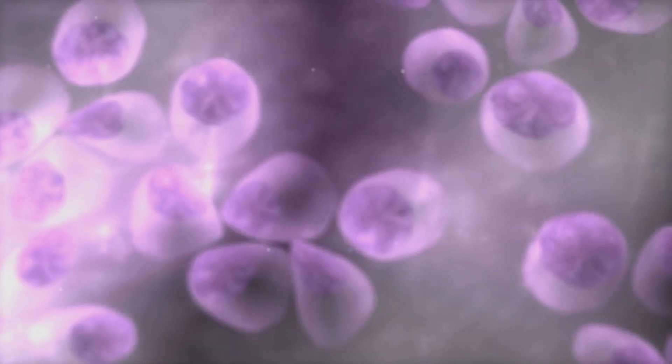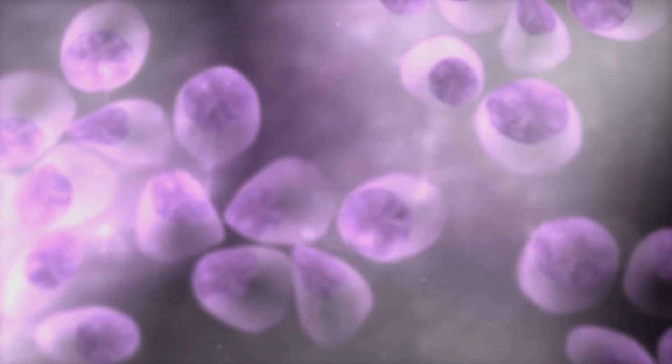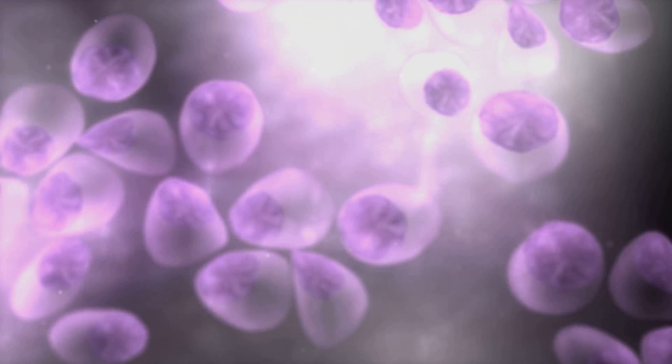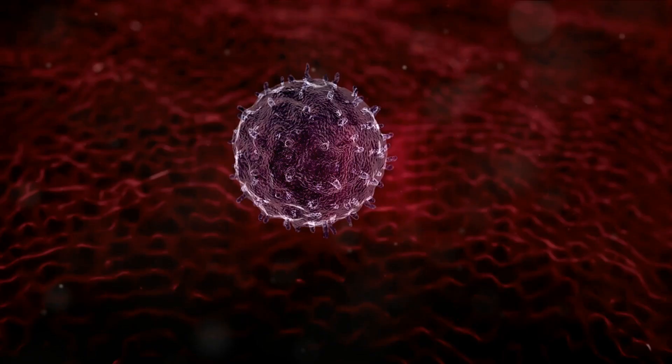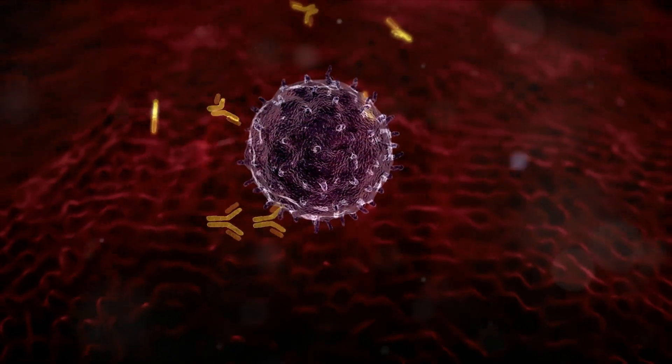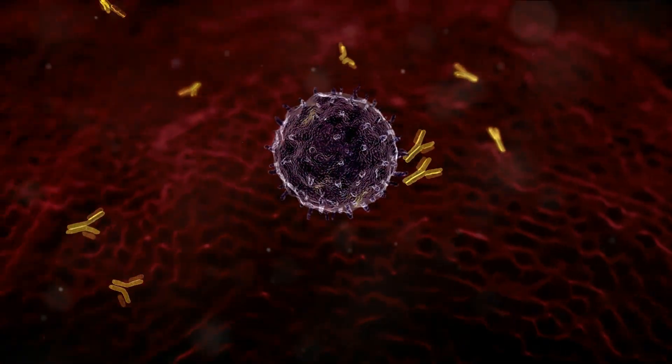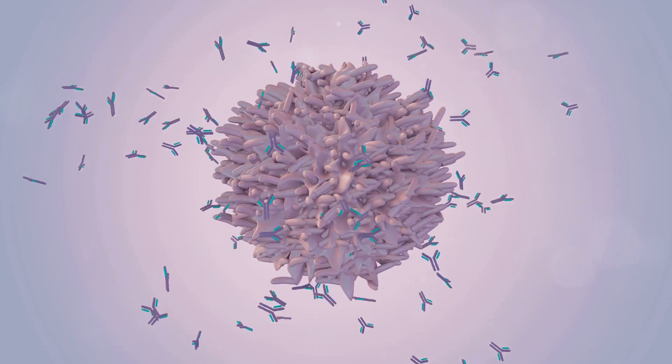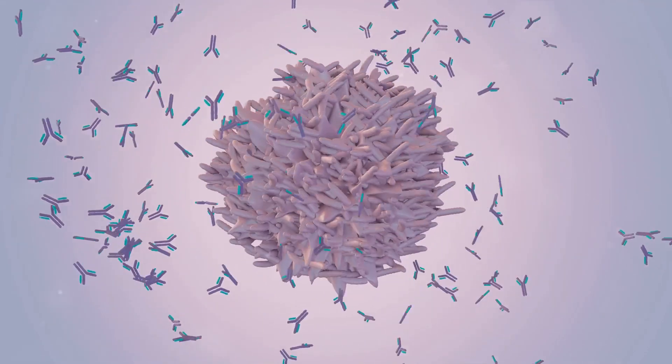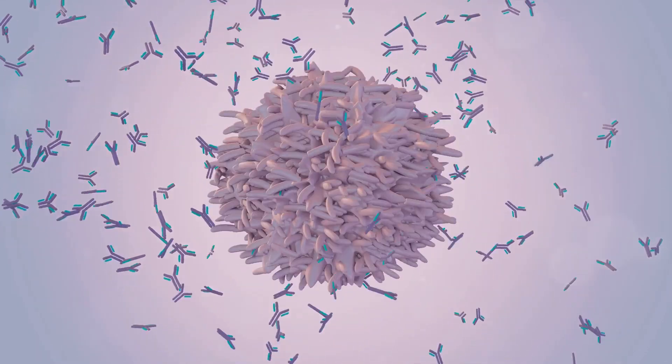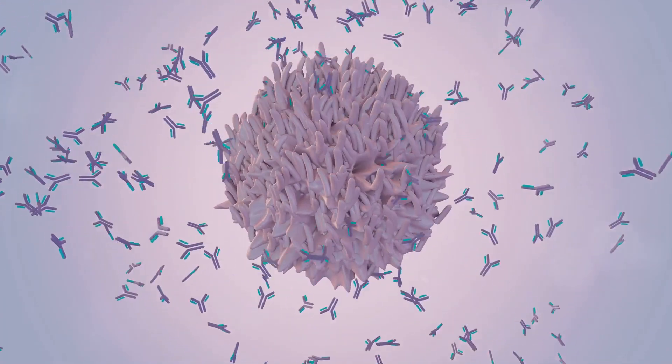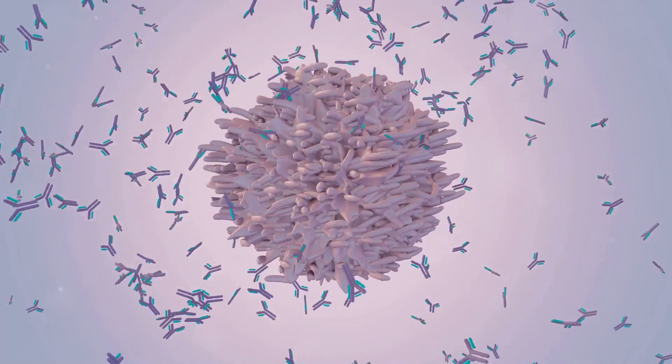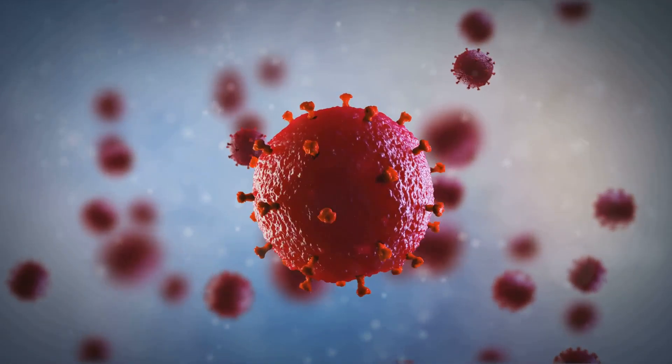Then we have the lymphocytes, the memory keepers of our immune system. They are the reason why we don't get sick from the same disease twice. When a pathogen invades our body, the lymphocytes memorize its characteristics. If the same pathogen tries to invade again, these cells are ready to launch a rapid and effective response. Lymphocytes are also the ones responsible for producing antibodies, proteins that can recognize and neutralize specific pathogens.